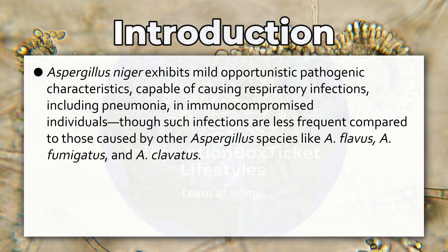Aspergillus niger exhibits mild opportunistic pathogenic characteristics, capable of causing respiratory infections including pneumonia in immunocompromised individuals, though such infections are less frequent compared to those caused by other Aspergillus species like Aspergillus flavus, Aspergillus fumigatus, and Aspergillus clavatus.